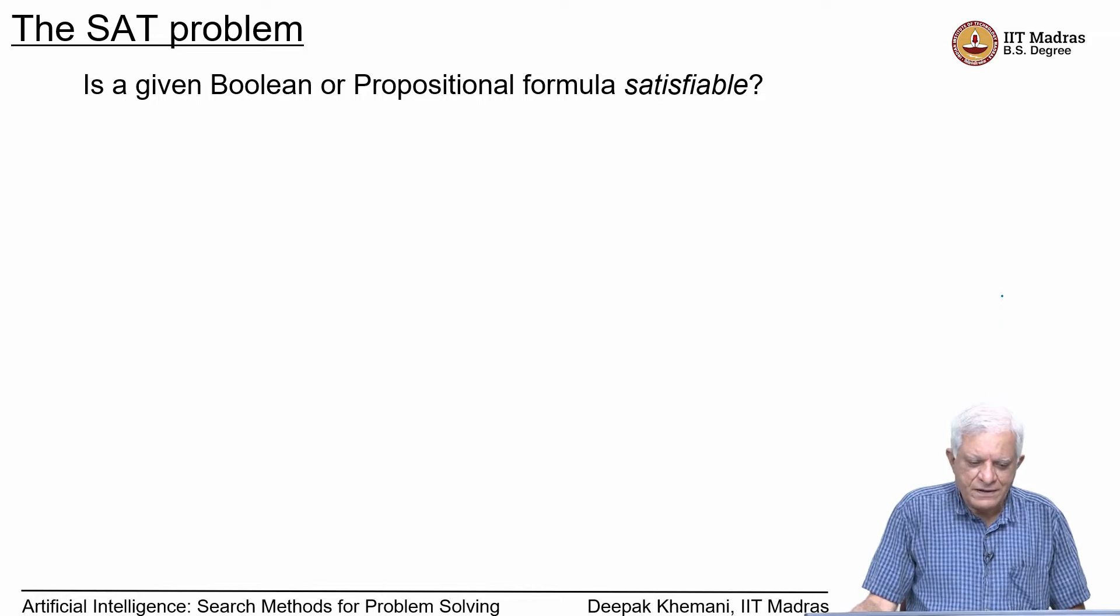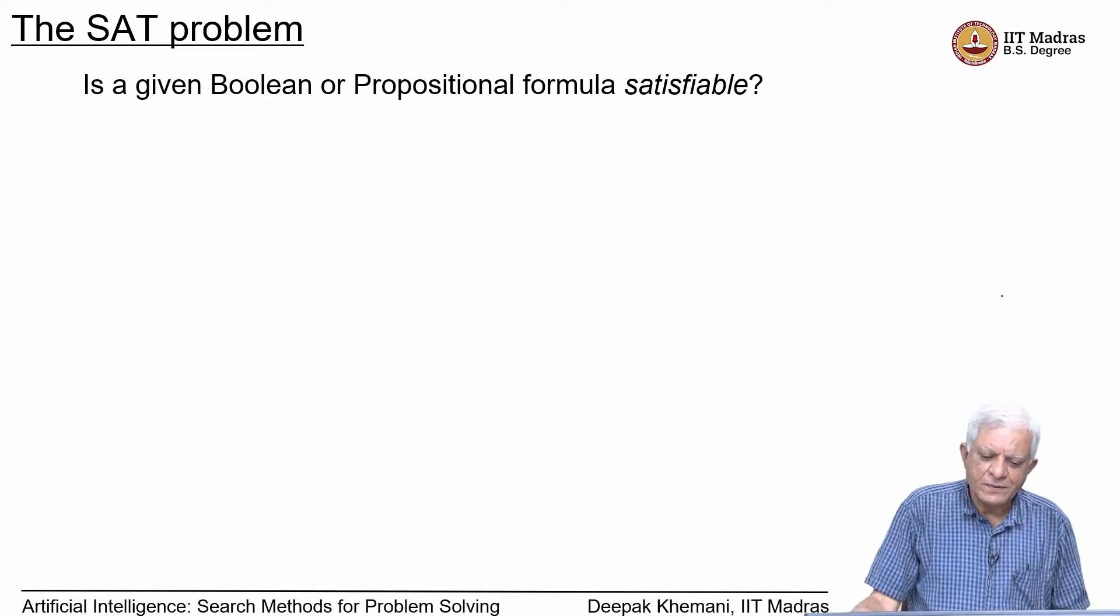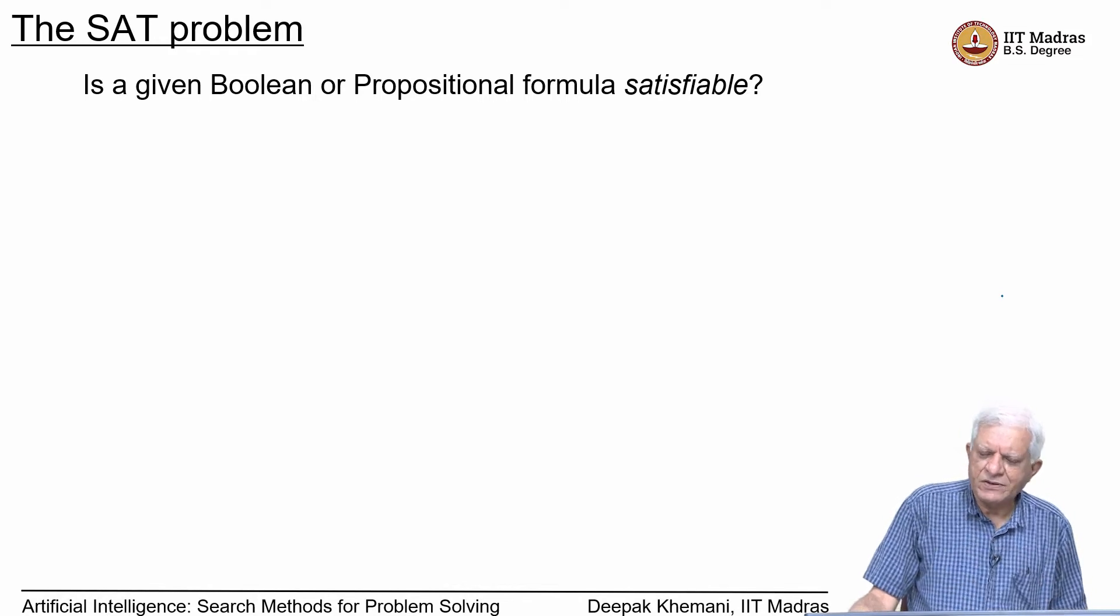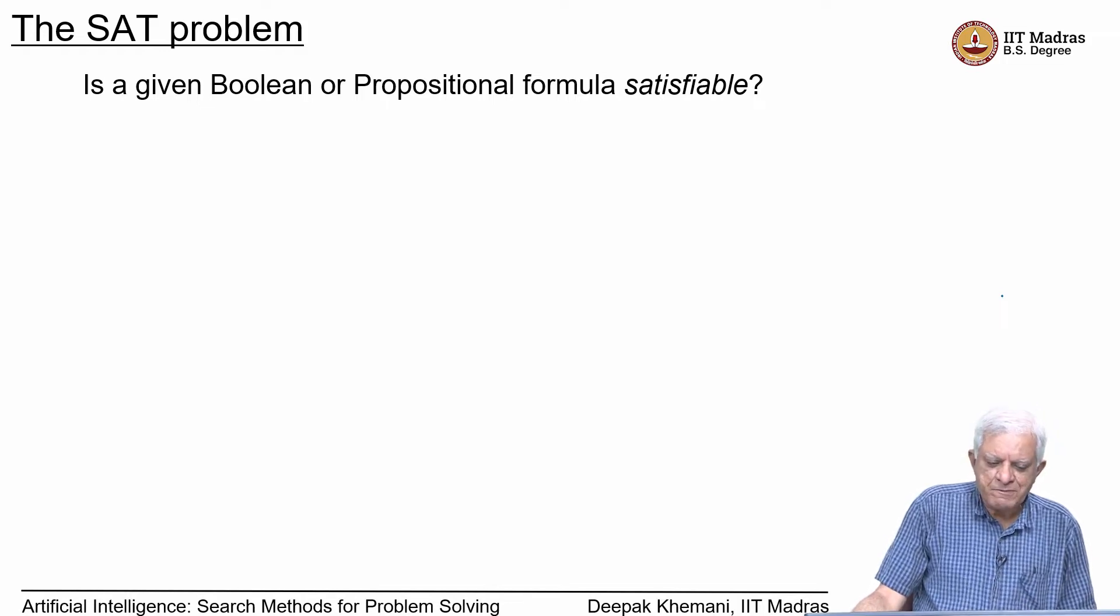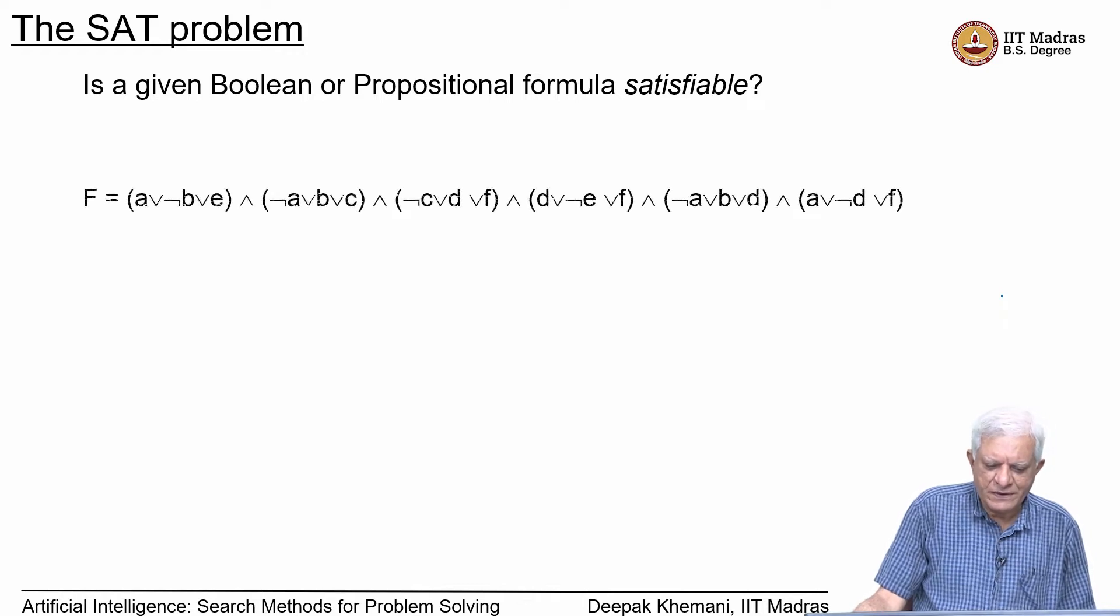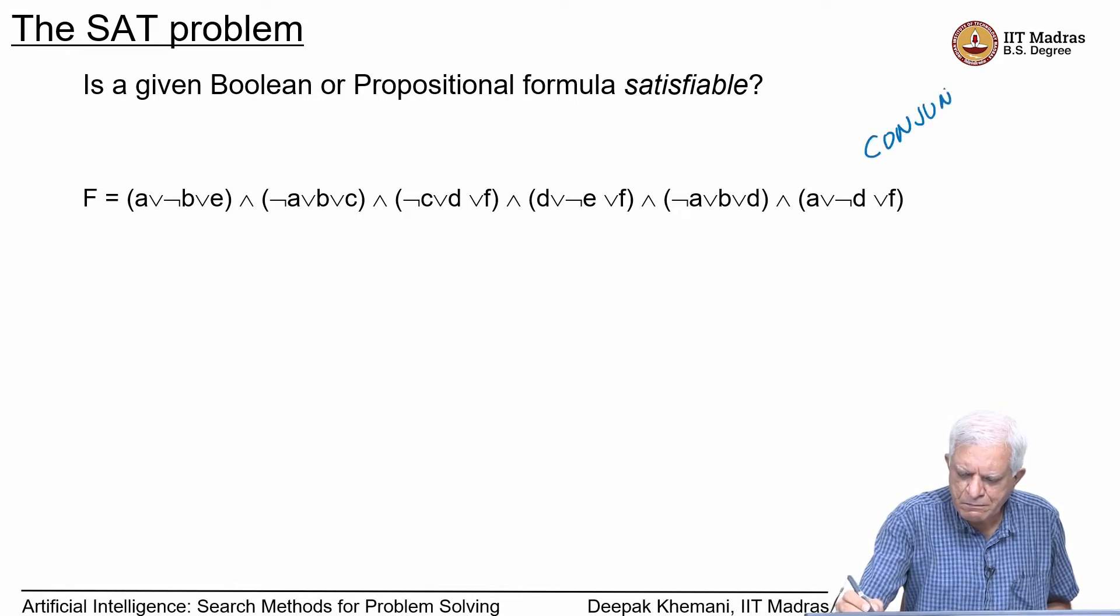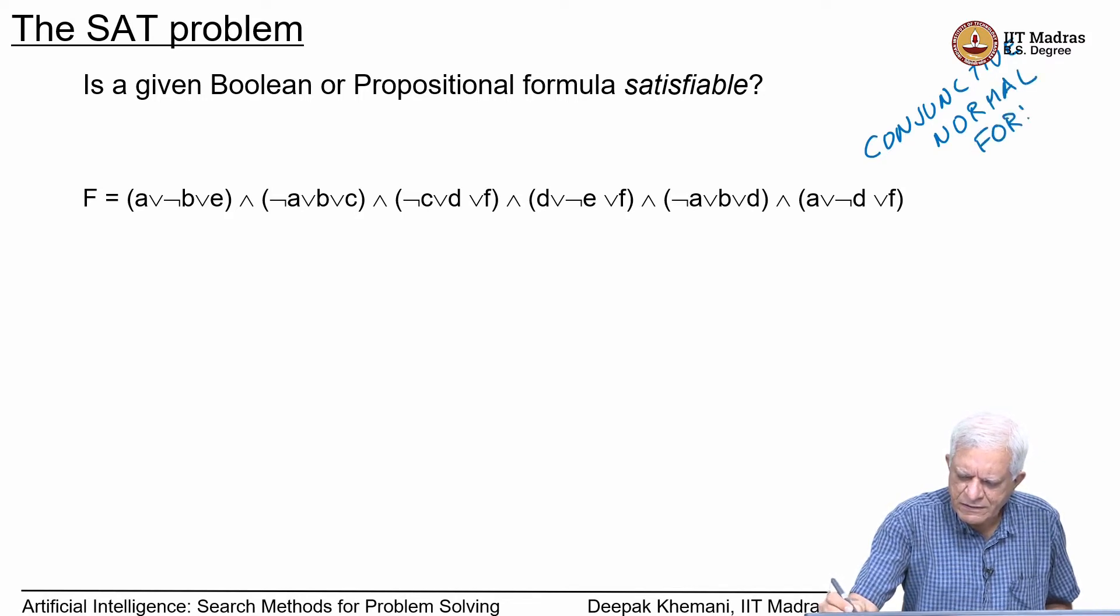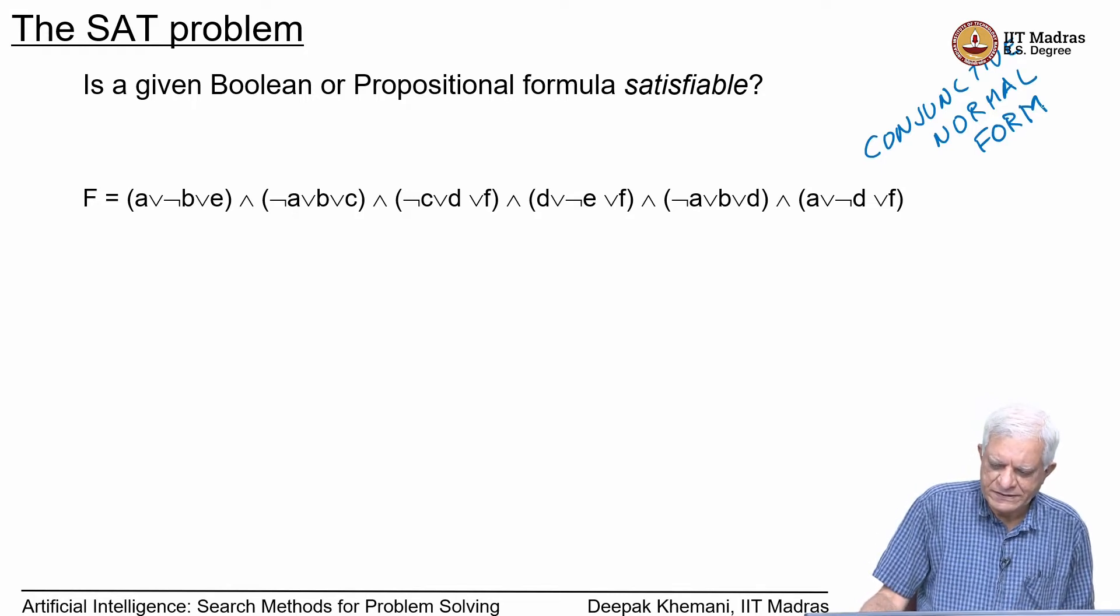What is the SAT problem? SAT is short for satisfiable, and we are talking about Boolean formulas or propositional logic, where we have statements like P, Q, R, S, T or Boolean formulas with variables A, B, C, D, E or X, Y, Z and so on. We are looking at a particular form of this formula called the conjunctive normal form. It is common practice to convert any propositional formula or Boolean formula into a CNF formula. What is the conjunctive normal form?